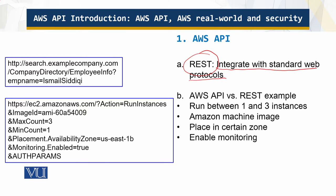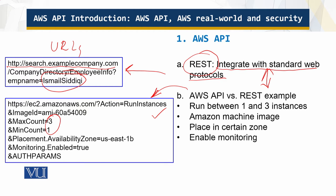Here is an example of REST. You can see a structure very similar to HTML, using URLs to look up employee info for a certain employee named Smile Siddiqui. Now this next example is for the Amazon Web Services API. What this code is saying is: run between one and three instances, use a specific Amazon Machine Image, place them in the US East Coast zone, and enable monitoring. You can read it quite easily — there's not much difficulty.